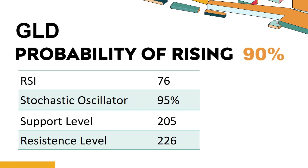The current stochastic oscillator of GLD is 95%. When the stochastic oscillator rises above the 80 level, it is usually considered overbought, indicating that the stock may be due for a price pullback. An overbought condition occurs when a stock's price rises too fast and too high in a short period of time and can be a sign that buying pressure has exhausted.